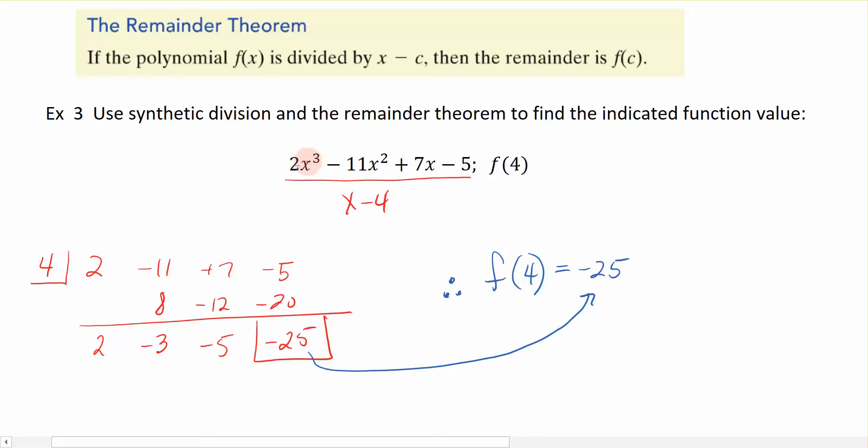In other words, if you go back in, like I said, and you replace x with 4, you're going to get negative 25. And that's how we apply the remainder theorem.